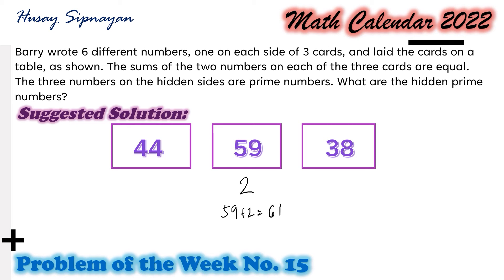Thus, the first card's hidden number is given by 61 minus 44 and that is equal to 17. And the last card's hidden number is given by 61 minus 38 and that is equal to 23.